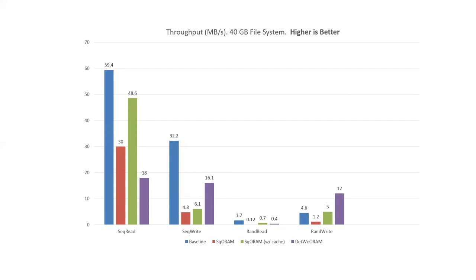SQORAM has been implemented both as a Linux kernel device mapper and as a block device in user space. The main metric of evaluation is throughput reported in megabytes per second. SQORAM maps data from a logical volume mounted with a 40 gigabyte EXT4 file system, and data is written to an off-the-shelf HDD. Based on the results, for sequential reads, SQORAM outperforms the previous state of the art, DETWORAM, because SQORAM ensures locality-preserving reads, which is not the case with DETWORAM, which organizes data similar to a log-structured file system. For sequential writes, DETWORAM performs better than SQORAM because the overall asymptotic write complexity of DETWORAM is lower. Random reads and random writes also follow similar trends.